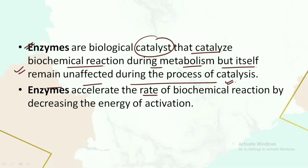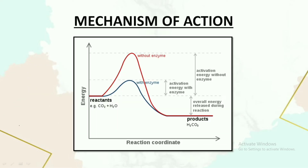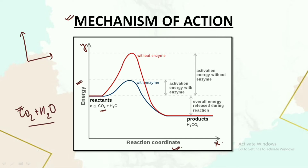The enzyme accelerates the rate of biochemical reactions by decreasing the energy of activation. Let's understand this with the help of a graph — this is very important. On the y-axis we plot the energy used and on the x-axis we plot the reaction coordinates. Consider the reactants as carbon dioxide and water. Without the enzyme, these reactants would require a large amount of activation energy to be converted into product.